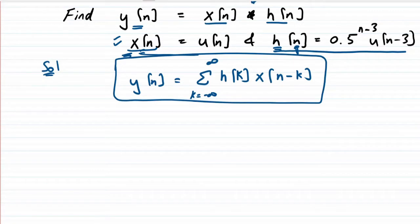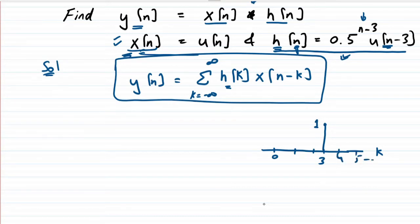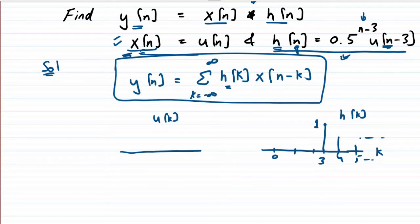Let us first plot h(k). We know it starts at u(n-3), so positions 0, 1, 2 are zero, and it starts at k=3. The first value occurs when we put n=3: 3 minus 3 is 0, so 0.5 raised to the power 0 is simply 1. At k=4, 5, and onward, we have a decaying function. This is our h(k).